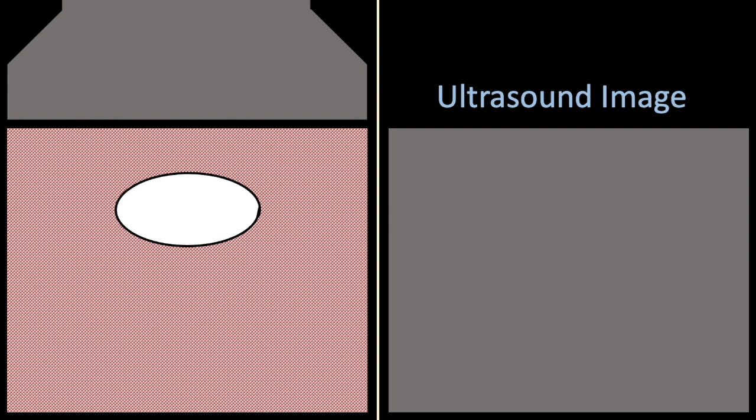So in the image on the left we have the ultrasound probe over the soft tissue with an ovoid calculus. Normally the ultrasound beam is going to hit off of the calculus, be reflected off of the calculus, and produce an image that is going to be an outline of the edge of the calculus.